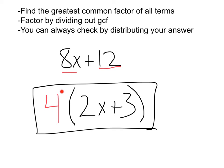If I distribute that out, that's going to be 4 times 2x, 8x, plus 4 times 3, 12. We are golden.